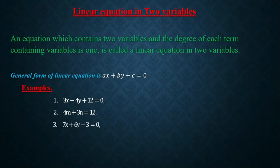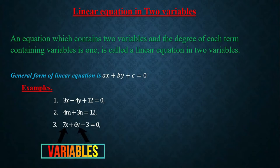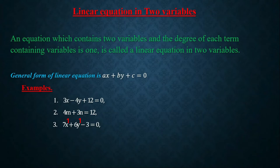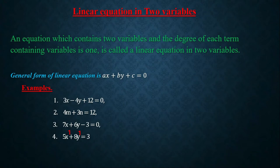Third example: 7x + 6y − 3 = 0. Here we can see x and y; there are two variables, x has power 1 and y has power 1, so they form a linear equation in two variables. Fourth: 5x + 8y = 3. Here x has power 1 and y also has power 1, so they are a linear equation in two variables.